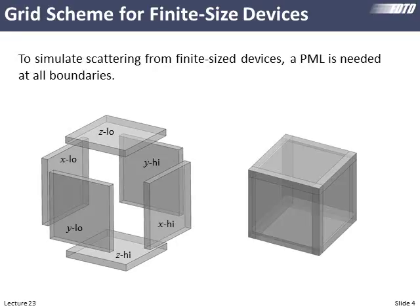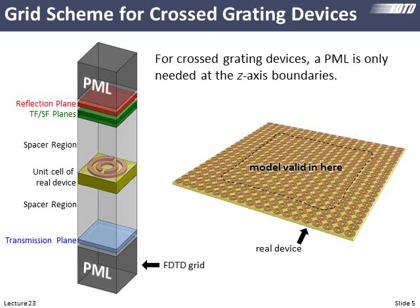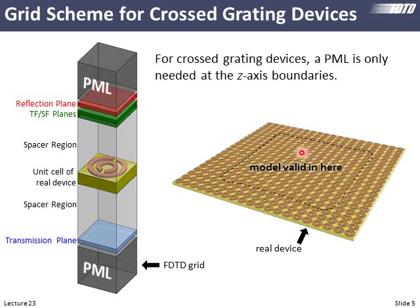In this lecture, we'll build on our grid scheme for modeling things that are infinitely periodic in the X and Y directions. We will have PMLs at the top and the bottom to absorb outgoing waves, a plane near the top recording reflected fields, a plane near the bottom recording transmitted fields, our total field scatter field interface slices, our device in the middle, and spacer regions so that evanescent fields don't touch the PMLs. Since we have an infinitely periodic model, we're looking at the response throughout the bulk of the structure — nothing's changed from two dimensions, just more dimensions.